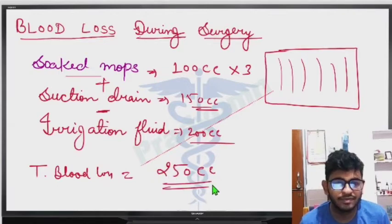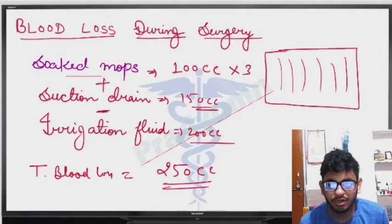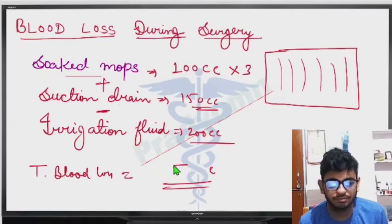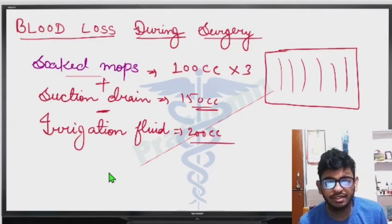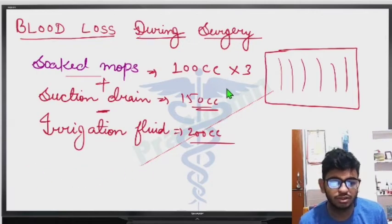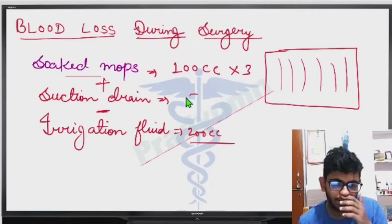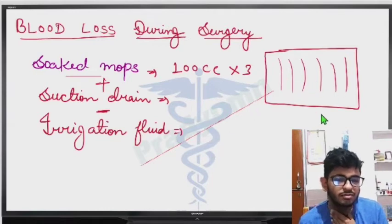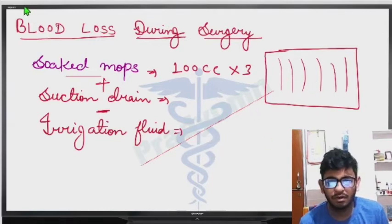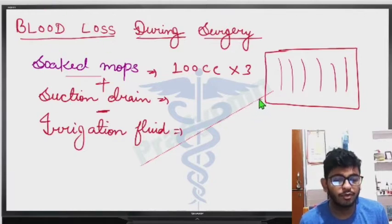So the total blood loss in this example was 250 cc. These are the three criteria we use to estimate blood loss. One more important thing: there are radiopaque lines on surgical mops, which are very important.